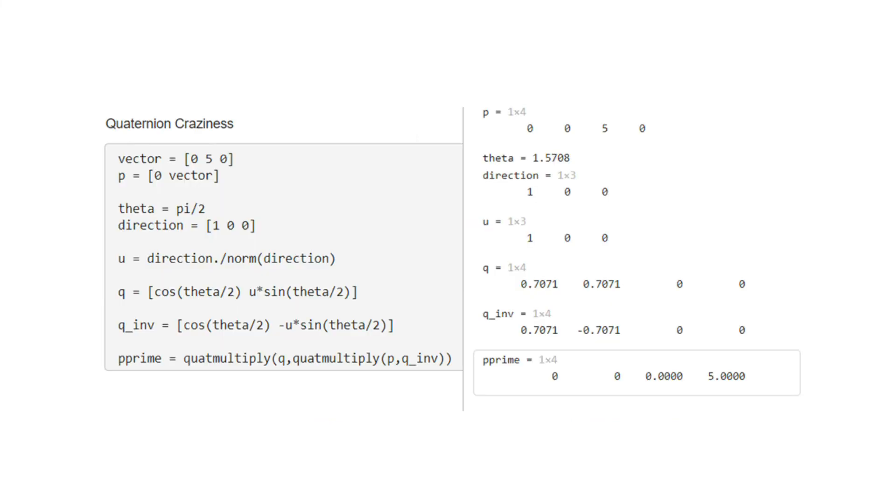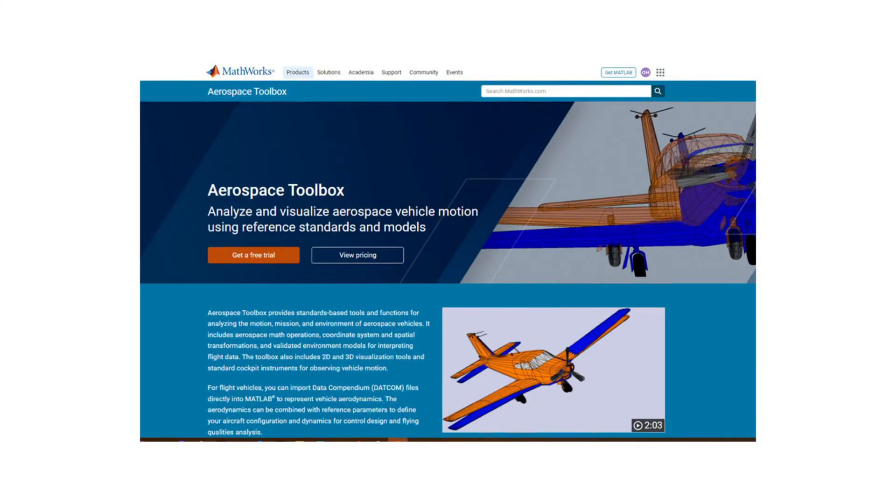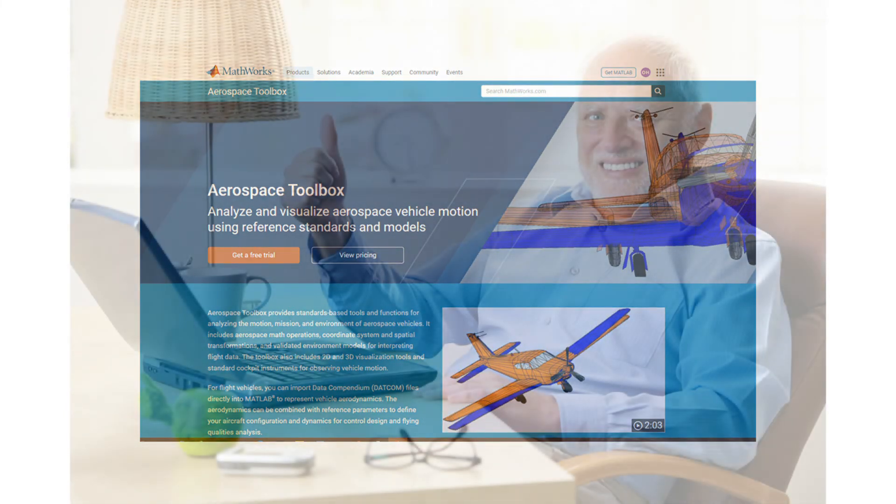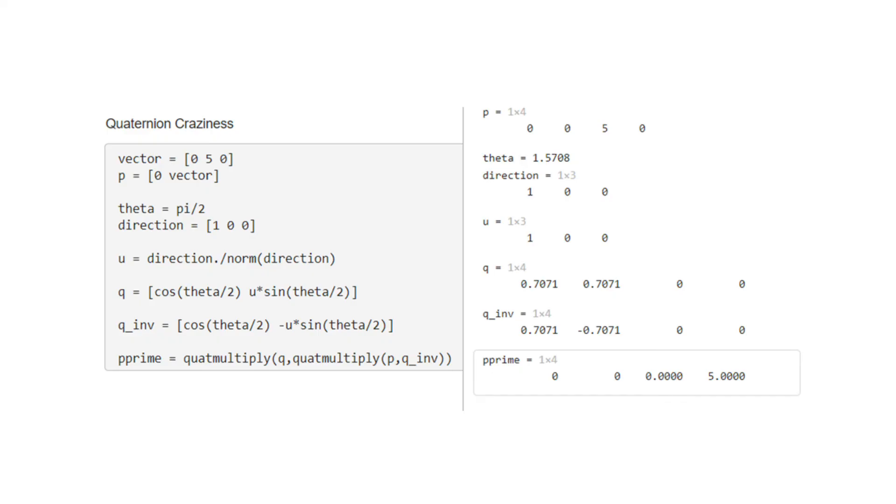Instead, I coded up a quick example in MATLAB. Turns out there's this thing called the aerospace toolbox, which allows for a bunch of cool aerospace simulation stuff that actually makes all my cylinder code before kind of irrelevant. But more importantly, it has some quaternion functions in MATLAB. So we start with the vector that we want to rotate and make it into a quaternion by adding a zero scalar term to the front.